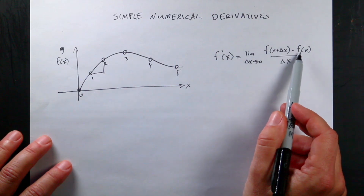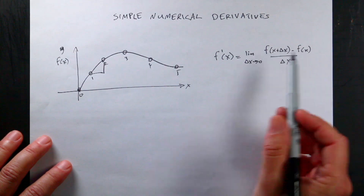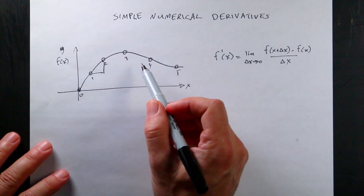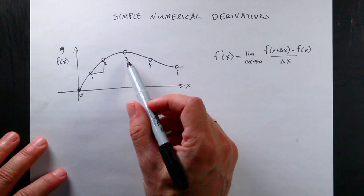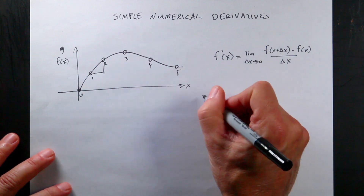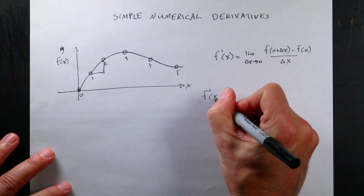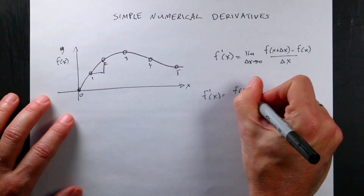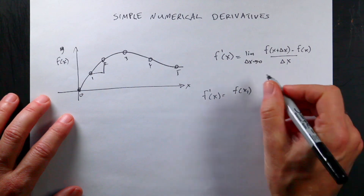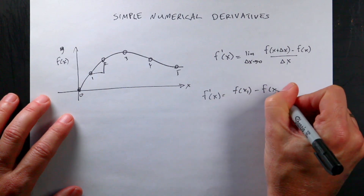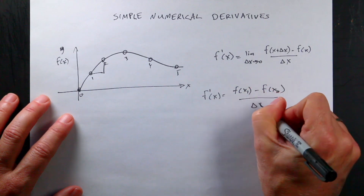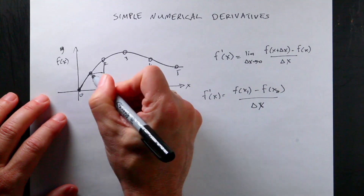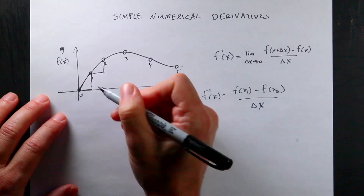Now, if we use this definition, you're actually using the next x to find the derivative, which is great if you start right here — you can use the next x. But if I'm collecting data over time, I can't use the next one because I don't have it. So I'm going to use a slightly different form: f prime at x1 equals f of x1 minus f of x0, all over delta x. For each data point, I use the one before it — the change in f divided by the change in x — and that's my slope.